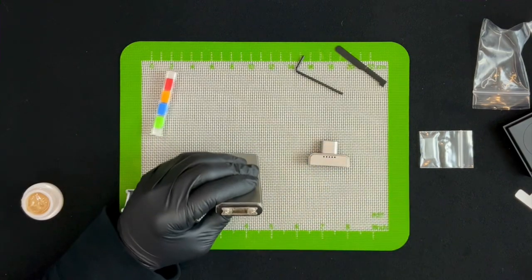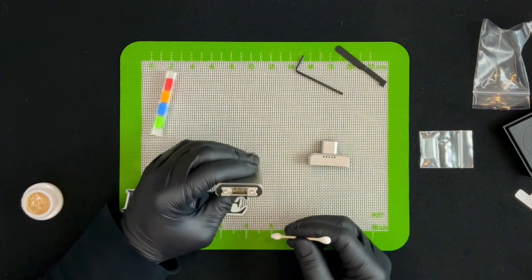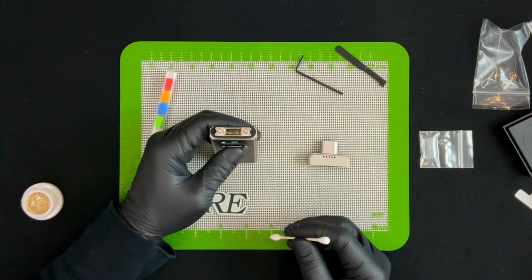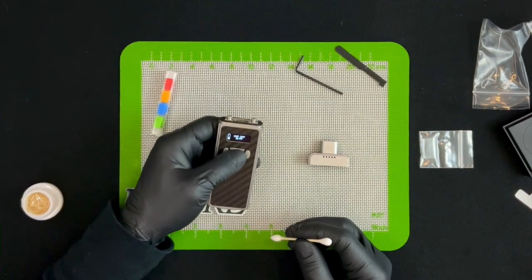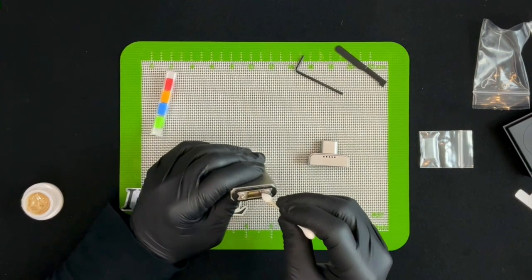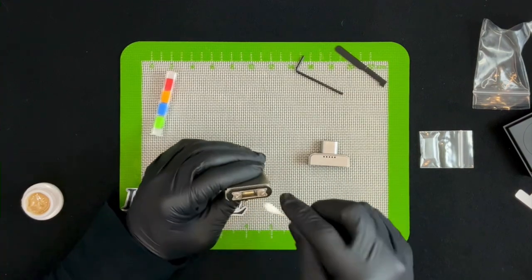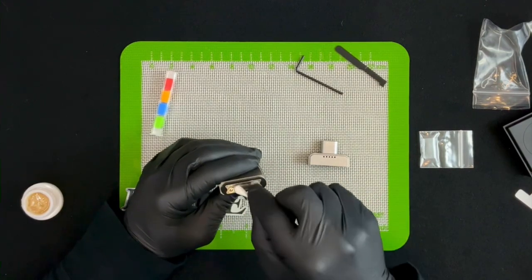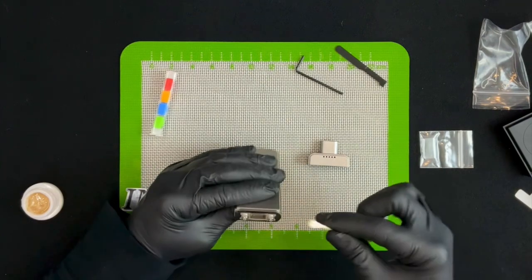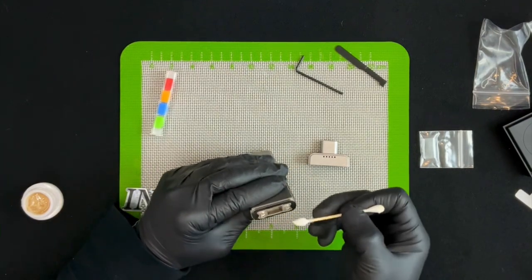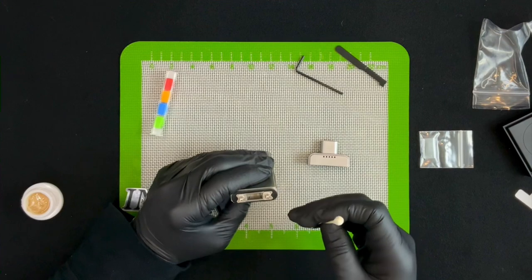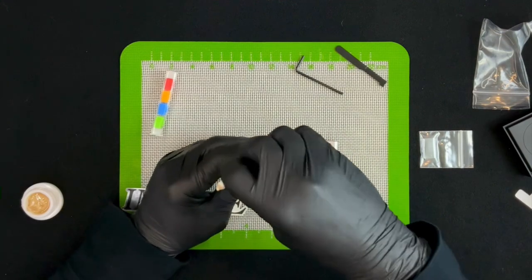To clean it, I think what I'm going to do is go with the cap off. Since it has that cap off temperature, I'm just going to hold the button, let it heat up, stick my Q-tip in there and just kind of get all that out of there. That was really easy to clean. Looks like I got the majority out of it in just one or two passes.